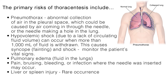Pneumothorax is an abnormal collection of air in the pleural space, which could be caused by air coming in through the needle, or the needle making a hole in the lung. If enough air gets into the pleural space, the lung can collapse, which may require a chest tube. To help prevent a pneumothorax, it is important that less than 1500 milliliters of fluid be removed at one time. If the fluid is completely drained at one time, needle laceration of the visceral pleura and the lung is more likely to occur.